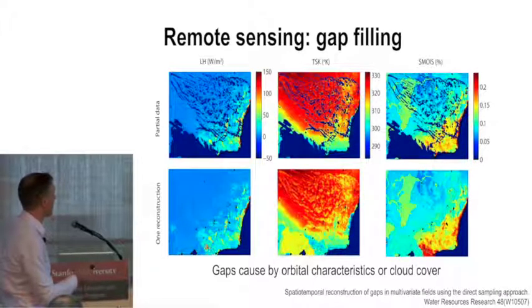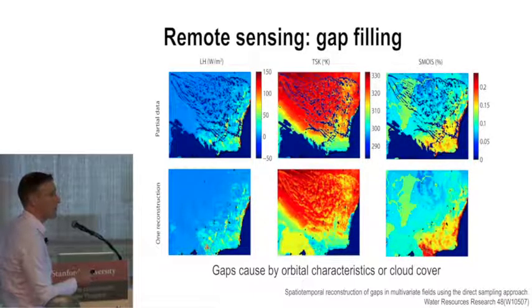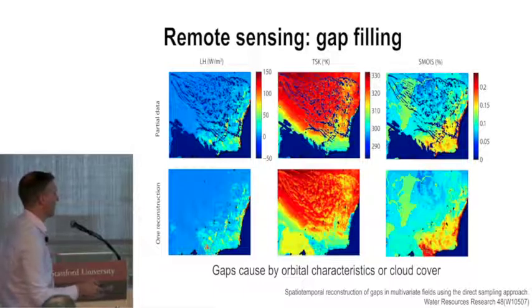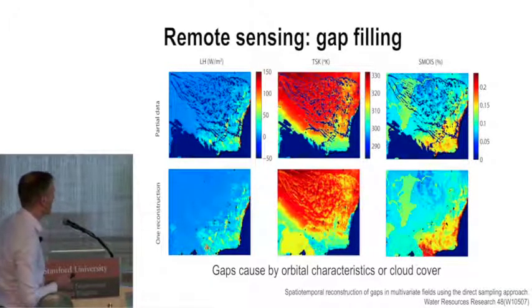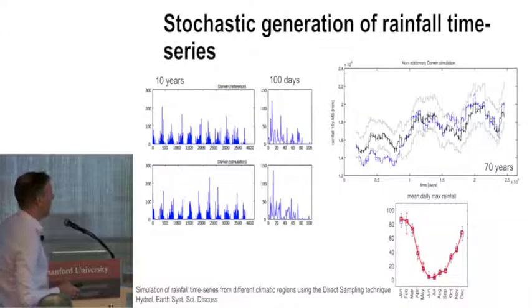Another example is when your satellite data is covered with clouds and those clouds are moving, you can sort of directly generate this fill-in or gap-fill.